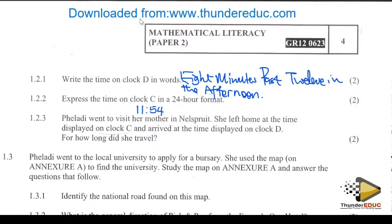Randy went to visit her mother in Nilsford. She left home at the time displayed on clock C, and arrived at the time displayed on clock D. So clock C is the start time and clock D is the end time. We need to find the duration.